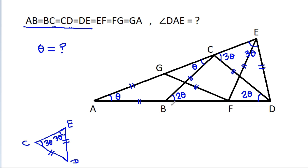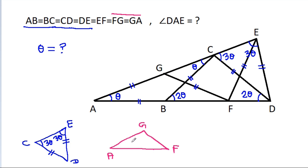And now we have GA is equal to FG. So in triangle AGF, GA is equal to FG. And this angle is theta, so this angle will also be theta. This angle will be theta. And this exterior angle will be theta plus theta, that will be 2 theta.